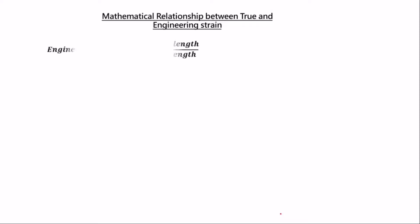Now let's move on to the mathematical relationship between the true and the engineering strain. The engineering strain is the change in length over the original length (e = ΔL/L₀). To find the true strain, we use integration: the true strain is the integral of dL/L from L₀ to L_i.